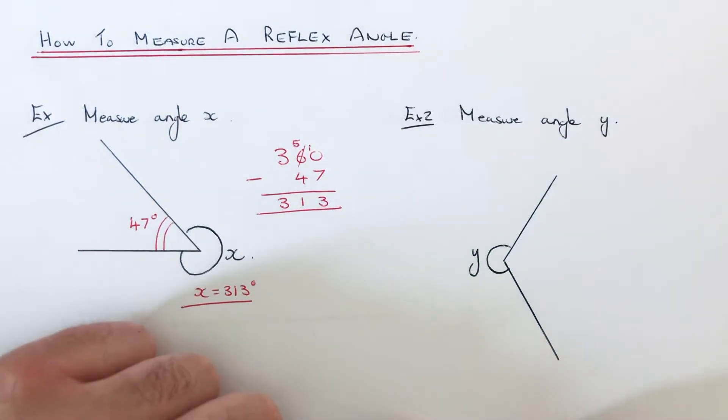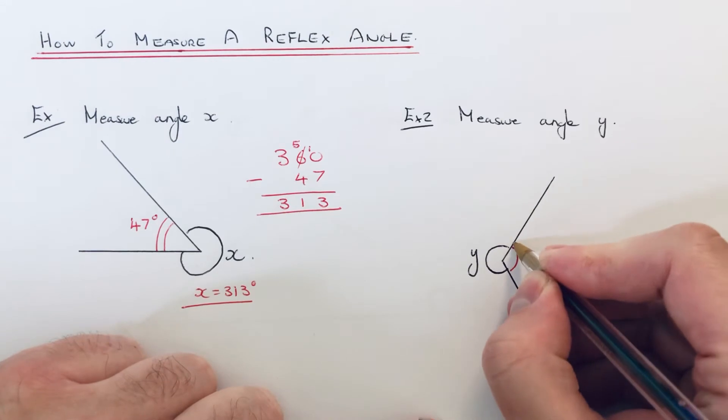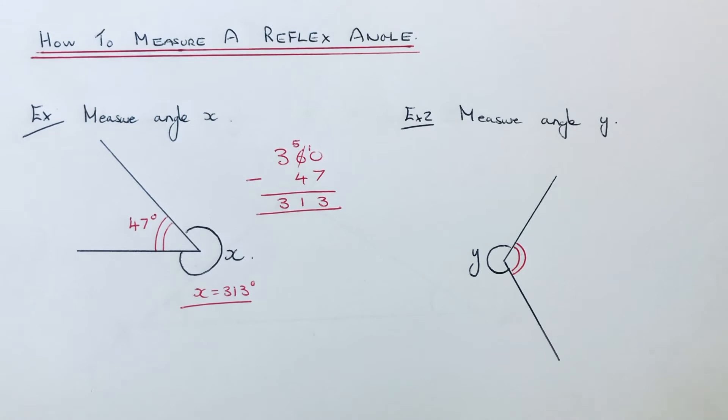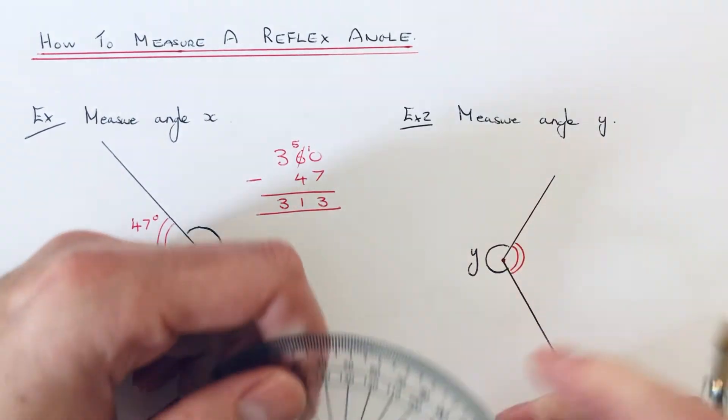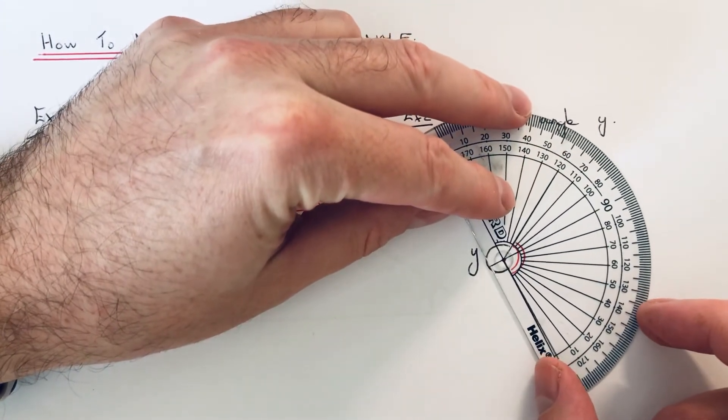got to find angle Y. So again what we're going to do is measure this angle here, okay, and then we can take that angle away from 180—sorry, 360. So if you get your protractor, let's put it on the center of the angle there.